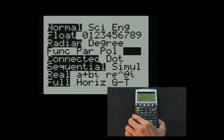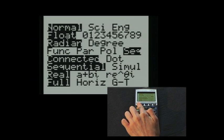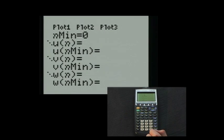Now select y equals and you will see the screen shown. As you see, there are three functions available: u, v, and w. Notice the term nmin. This represents the value for which you are setting n to begin.